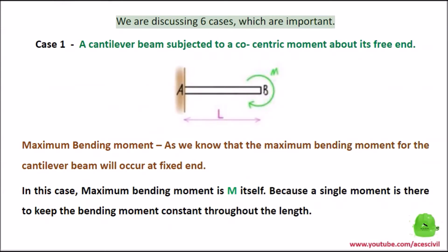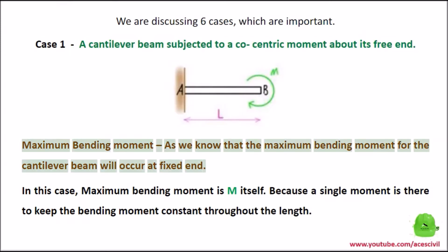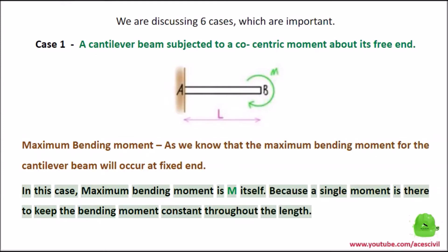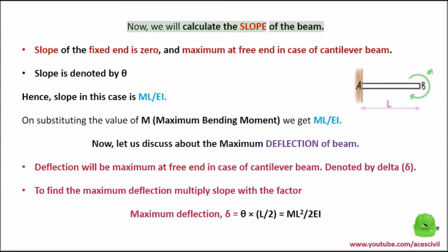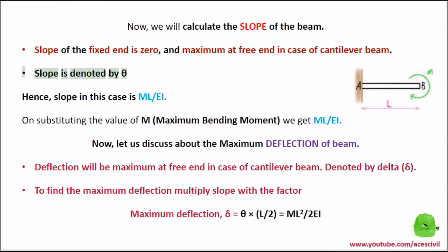We are discussing six cases which are important. Case 1: A cantilever beam subjected to a concentrated moment about its free end. The maximum bending moment for the cantilever beam will occur at the fixed end. In this case, maximum bending moment is M itself, because a single moment keeps the bending moment constant throughout the length. The slope at the fixed end is zero, and maximum at the free end in the case of a cantilever beam. Slope is denoted by θ.